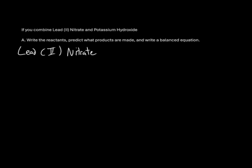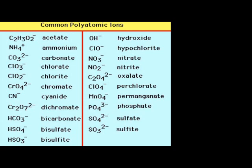Our first reactant will be lead 2 nitrate. First we'll write lead as Pb, and then the 2 after the lead represents that it has a charge of 2 positive. We'll add that to nitrate. Now nitrate is a polyatomic ion, not an element on the periodic table, and so we go to a polyatomic ion list. On this polyatomic ion list we can see that nitrate is third from the top on the right side, and the formula is NO3 negative.